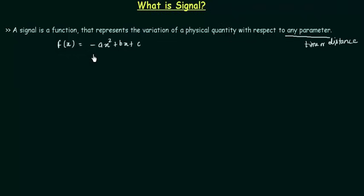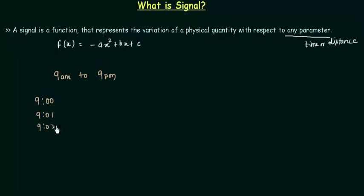Let's take a boy who will go to a particular place and measure the temperature from morning 9 AM to evening 9 PM. He has a thermometer and will measure the temperature every one minute. So he will have data at the end of the day — at 9 AM it is 27 degrees Celsius, at 9:01 it is 27.5 degrees Celsius, and so on with different temperatures for different times till 9 PM.